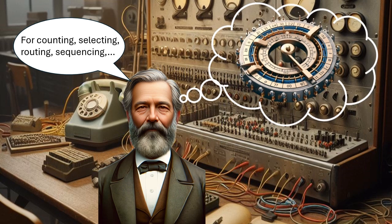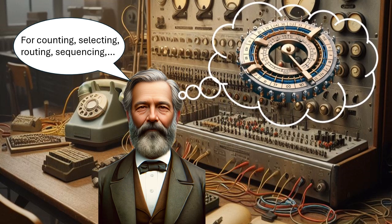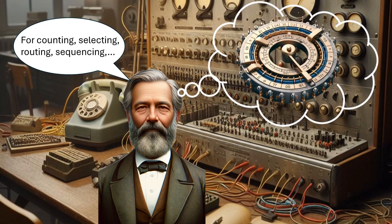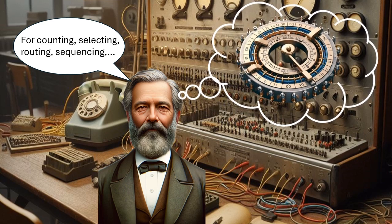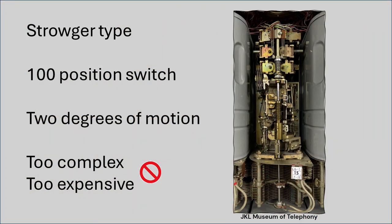Engineers dreamed of a stand-alone device that could be wired to count, or to select, or to sequence. Nothing practical existed. The Strowger 100-point switch was popular and could perform these operations, but it was complex and expensive with two degrees of motion. Something different was needed to solve the puzzle.